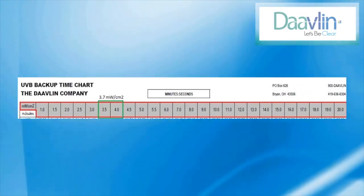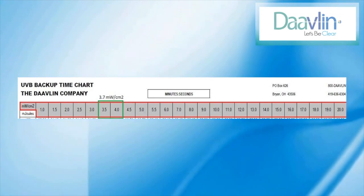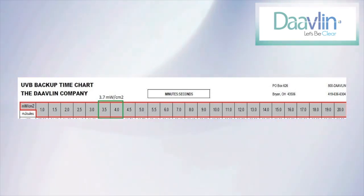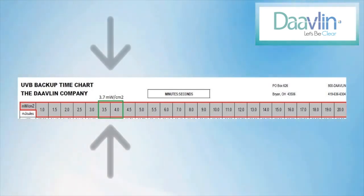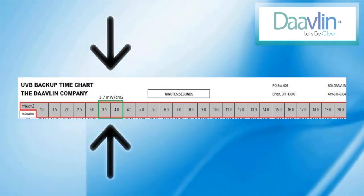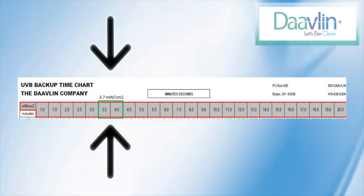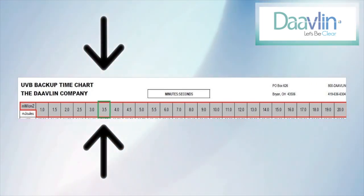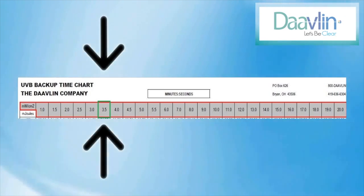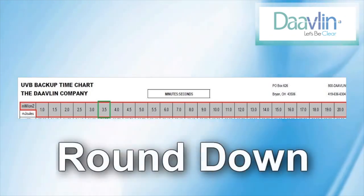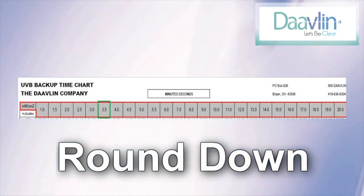In our example, the output is 3.7, so we need to find the interval in which 3.7 falls. According to this chart, 3.7 falls between 3.5 and 4. In this example, we will ignore the 4 and round down to 3.5. It is important to note that if your power output falls in between two numbers, you will always round down.